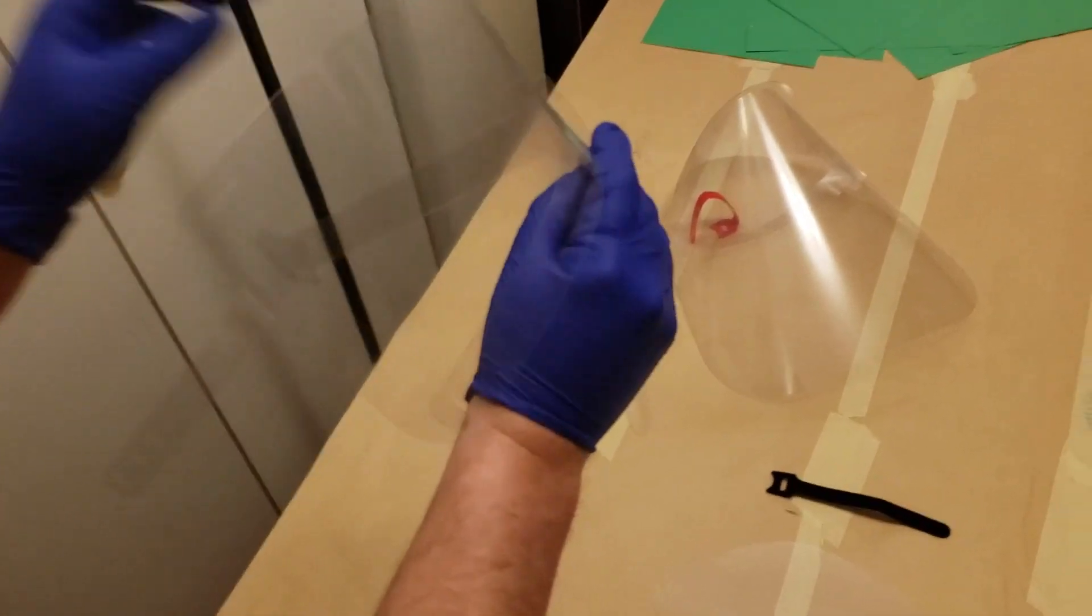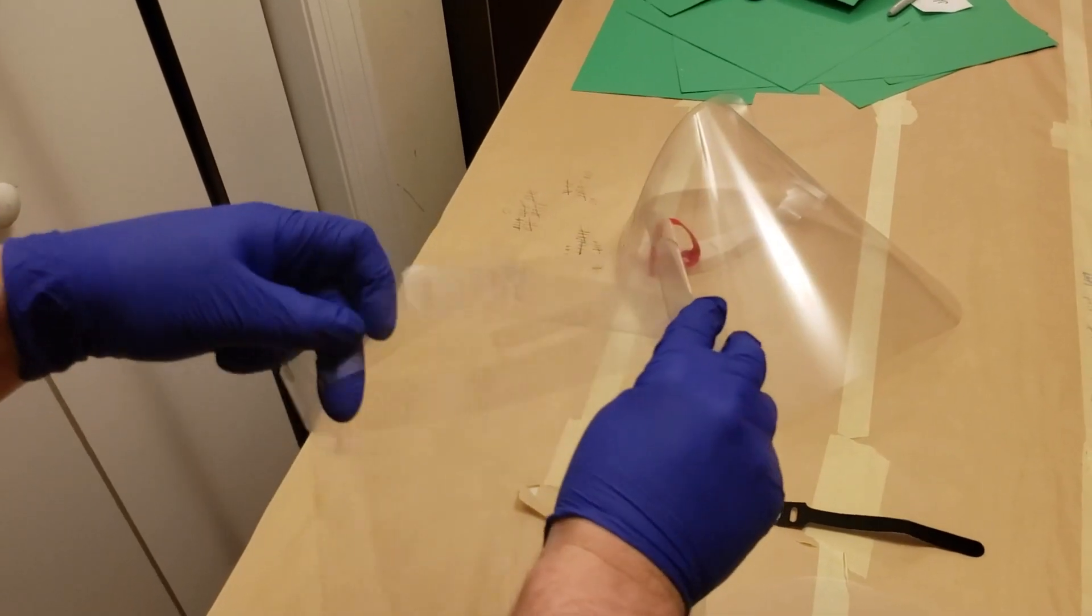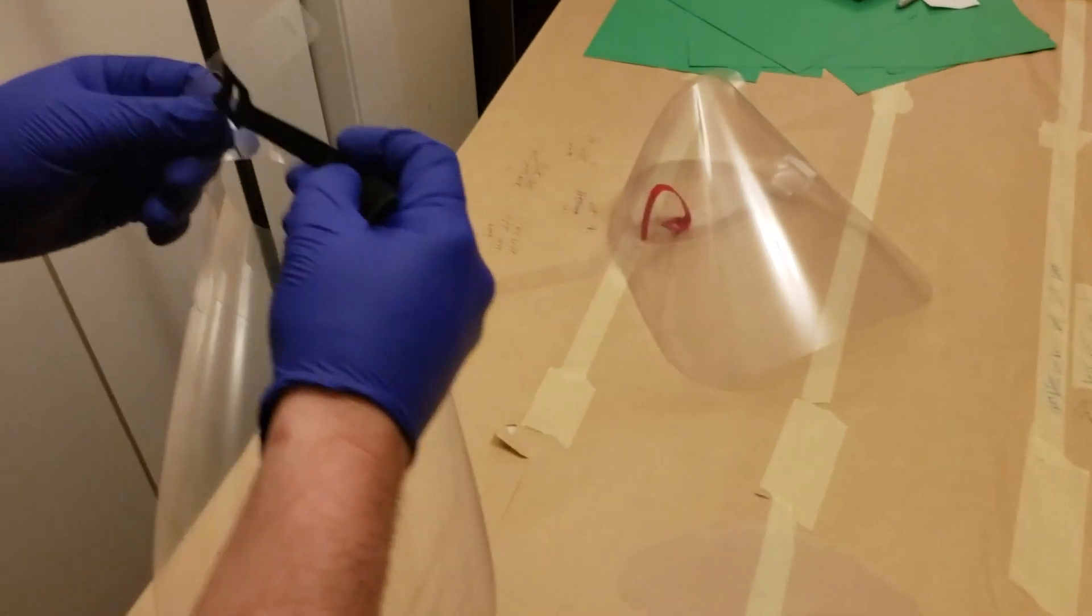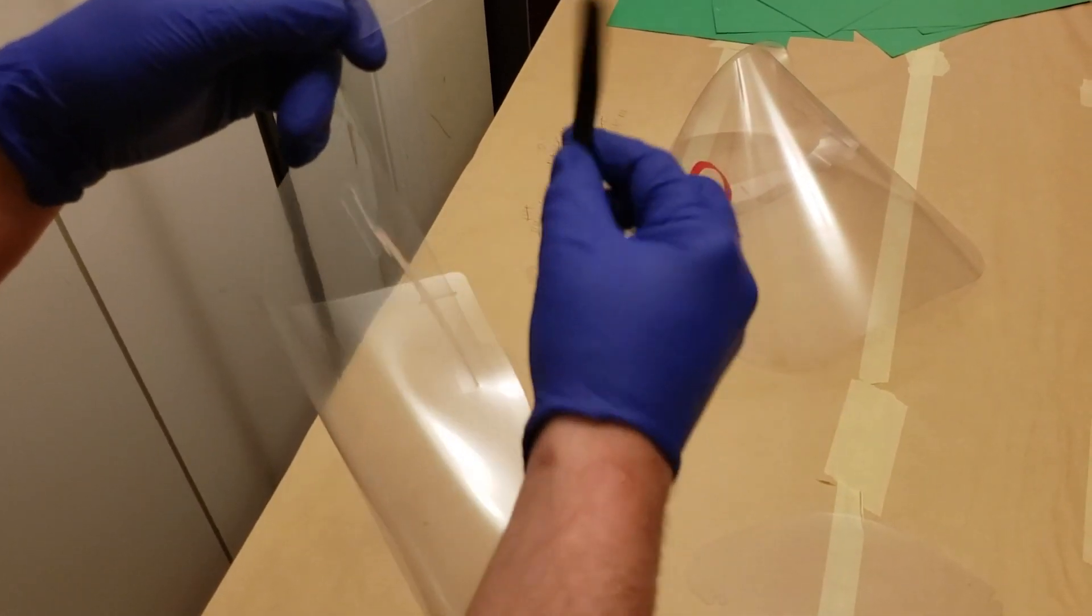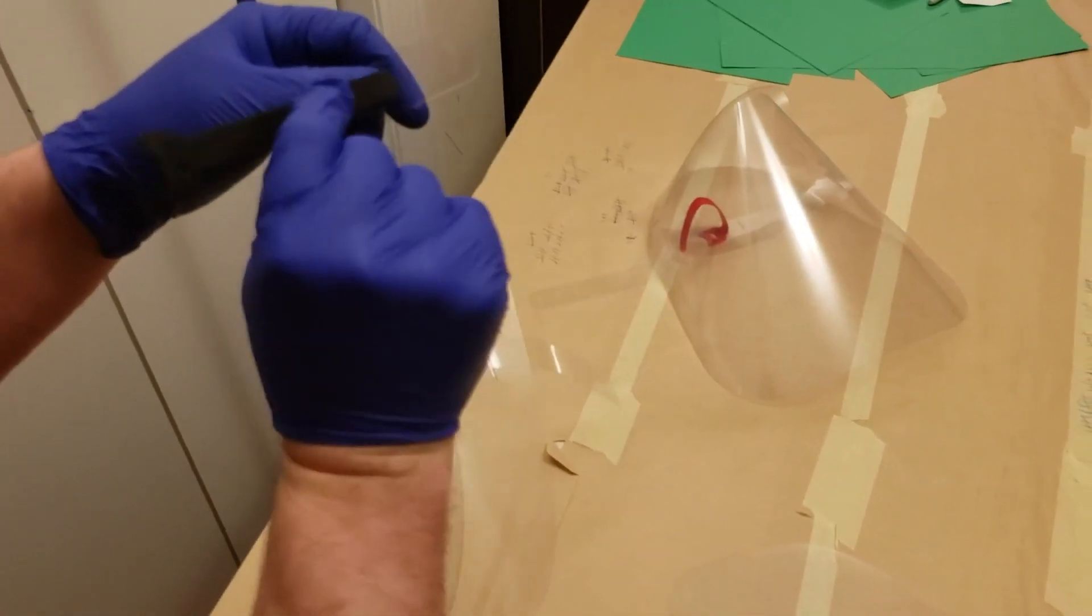So that locks that into place and it gives you two back straps. So now we're going to take the velcro and you can use any velcro. This is just a velcro tie that you can get cheap on Amazon. I'll post a link to all these supplies.